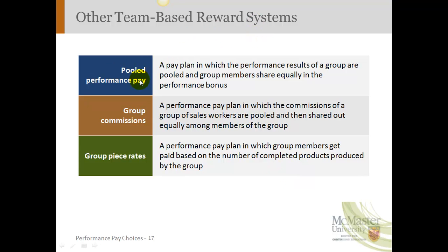Other team-based rewards are referred to as pooled performance pay systems, where members share equally in a performance bonus for that group. Examples include group commissions and group piece rates. With group commissions, the commissions of a group of workers — say, sales workers or any commissioned workers — are pooled and then shared out equally among group members. You notice this sometimes in restaurants, where tips might be pooled and divided equally so that people in the back — dishwashers, cooks — are all getting something.